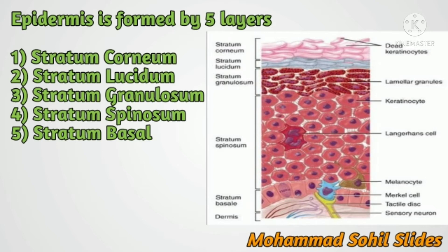First, stratum corneum, also known as the horny layer. It is the outermost layer and consists of dead cells called corneocytes. The cytoplasm is flattened with fibrous protein known as keratin. These cells contain phospholipid and glycogen.